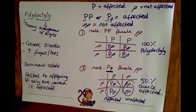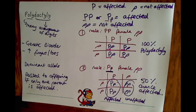With a dominant allele, you only need one parent who has the disorder to potentially transfer it to offspring. If you found this video on polydactyly useful, please press the like button. In the next video we're going to talk about another condition, which is cystic fibrosis.